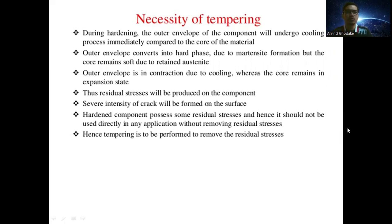During hardening, the outer envelope of a component undergoes the cooling process immediately compared to the core. The outer envelope converts into a hard phase due to martensitic formation, but the core remains soft due to retained austenite. The outer envelope is in a contracted state due to cooling whereas the core remains in an expansion state, thus residual stresses are produced on the component, and cracks of severe intensity can form on the surface.